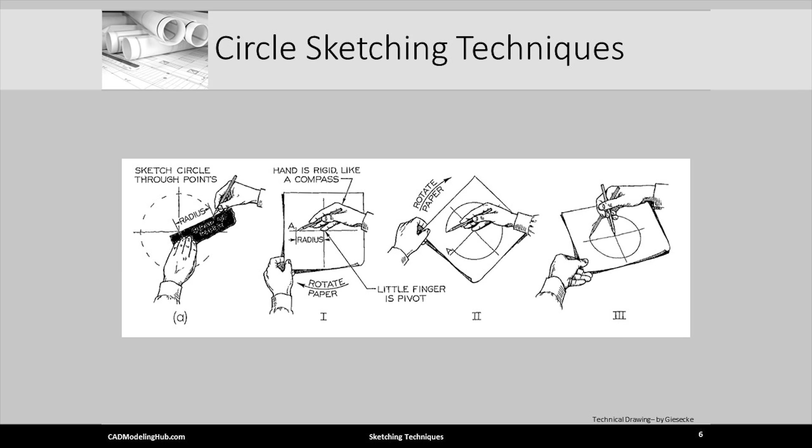Image 3 is similar to what I just explained except two pencils are employed. This approach allows much smaller arcs and circles to be sketched than can be done using the technique illustrated in image 1 and 2.